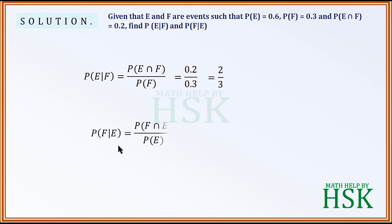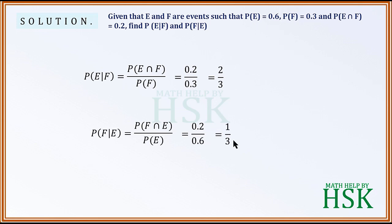Similarly, probability of F given E would be equal to 0.2 upon 0.6, because probability of E is equal to 0.6, which gives 1 upon 3. This is the required answer.